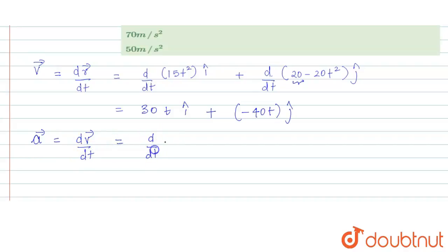So that is d/dt of 30t î minus d/dt of 40t ĵ.